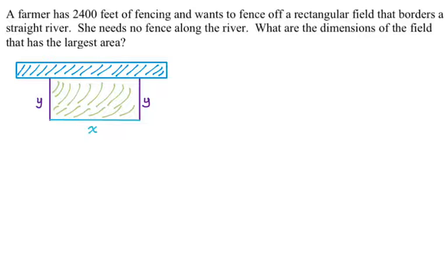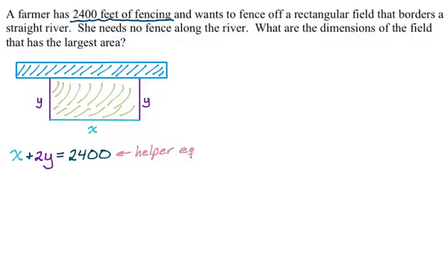We have 2,400 feet of fencing, so that's a perimeter constraint: x plus 2y equals 2,400. I'm going to call this a helper equation because we'll use it to solve the problem, but it's not the thing we're trying to optimize. We're trying to find the dimensions with the largest area. So I write down the area equation: we are trying to maximize the area, which is x times y.